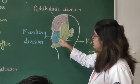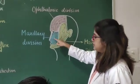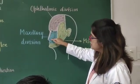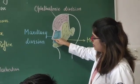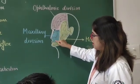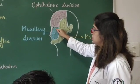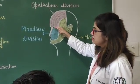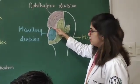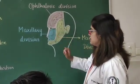The maxillary division supplies the side of the nose, ala of the nose, upper lip, upper jaw, side of the cheek, lower eyelid, conjunctival surface of the lower eyelid, and the rest of the part of the cheek.